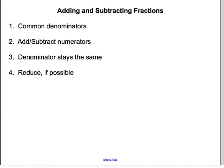Once you have common denominators, you can move on to step two, which is to add or subtract the numerators, just like you would normally add or subtract. That is your new numerator. Step three: the denominator stays the same. And the final step, four, is to reduce if you can. Sometimes we call that simplifying. You should always check to see if you can simplify or reduce your answer to lowest terms. Make sure you have this copied into your notebook before you continue on to the next slide.